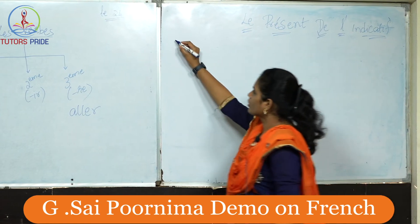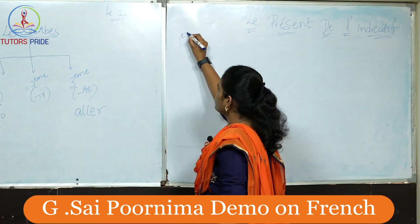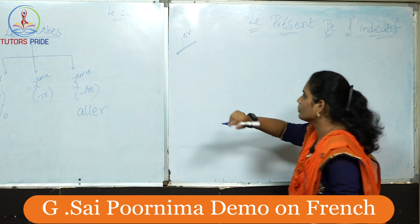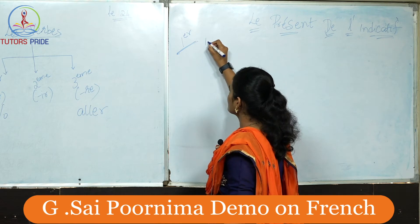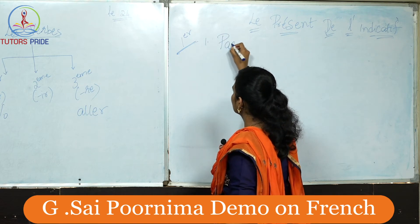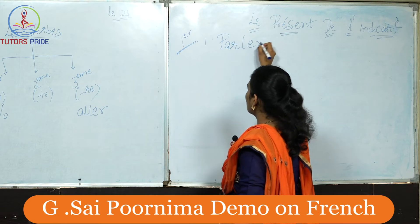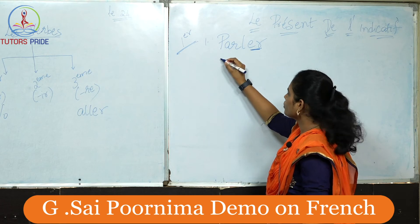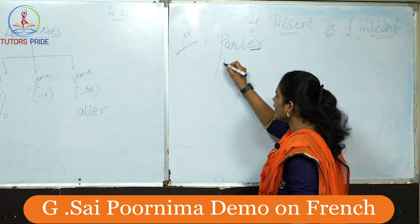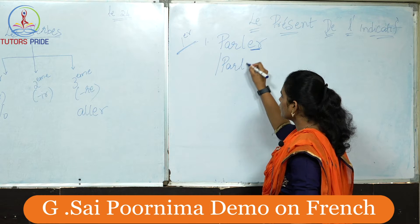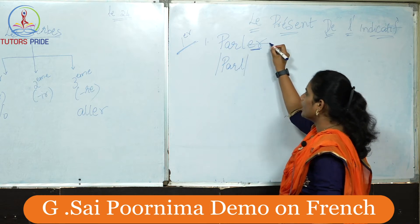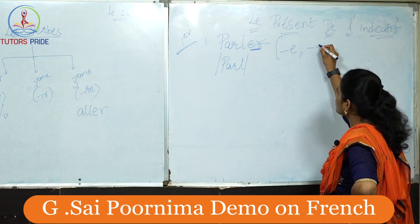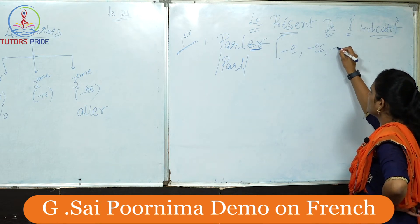The first group verbs — any verb ending with ER, premier group verbs. Let us take the first example: 'parler'. The verb ends with ER, so what we should remember is we will have a stem. We need to eliminate ER and add the endings according to the subjects.